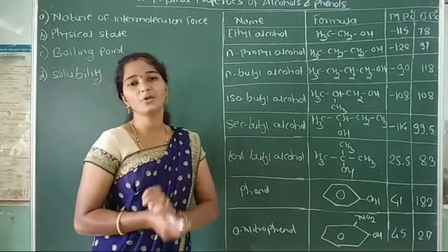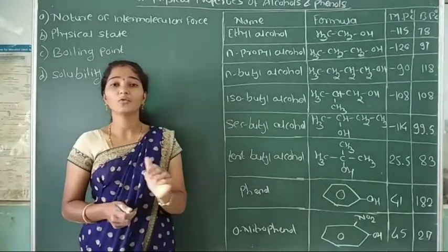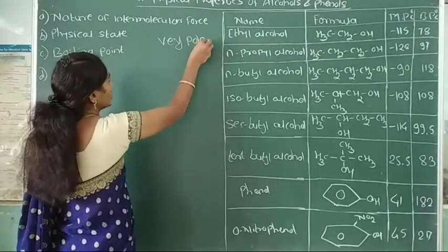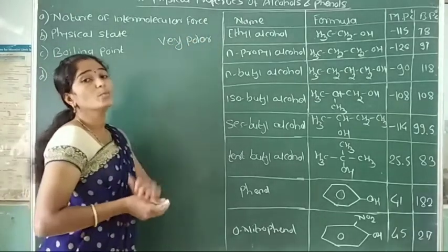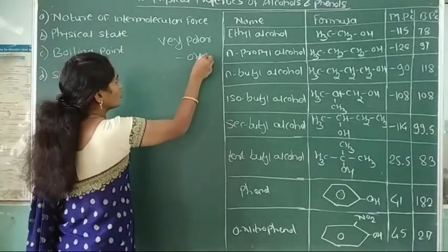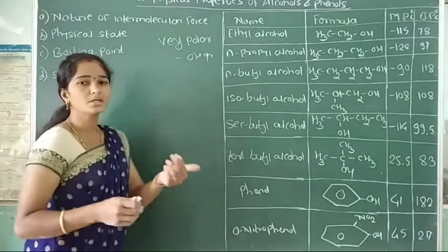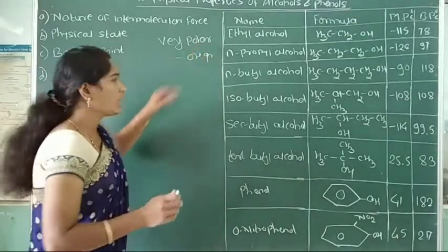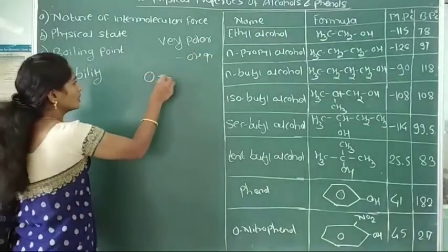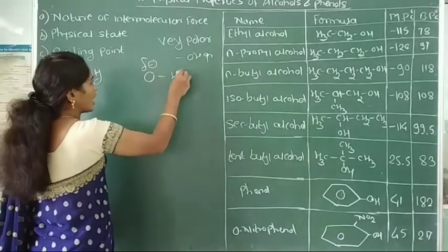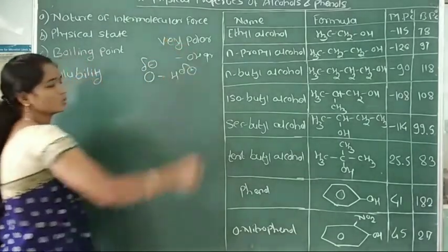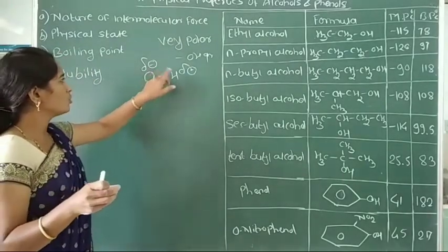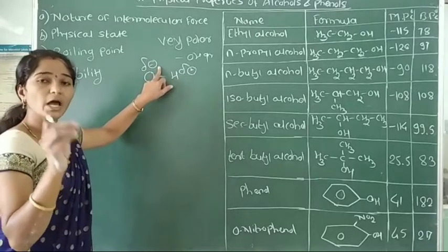Alcohols and phenols are very polar molecules due to the presence of the hydroxy group. Alcoholic and phenolic compounds are polar molecules. In the hydroxy group, oxygen is partially negative and hydrogen is partially positive charge. Therefore, this hydroxy group is a polar molecule. It produces positive and negative charge in the hydroxy group.